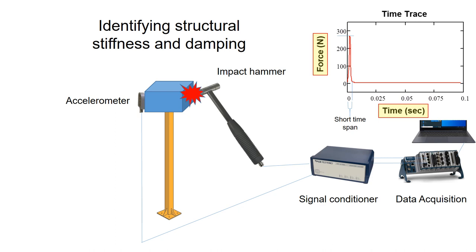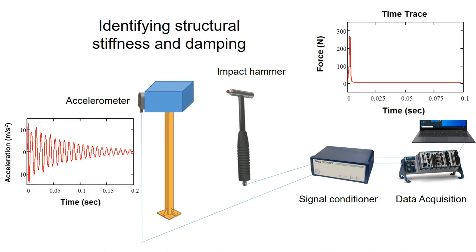Due to this impact force from the hammer, the structure will vibrate. This movement will be captured in the accelerometers. And the typical signal in the time domain of the acceleration of an object is shown on the left. The response of the structure shows an exponentially decaying motion.